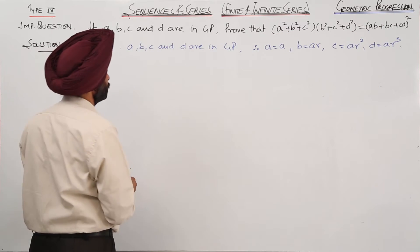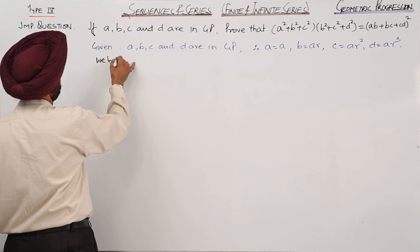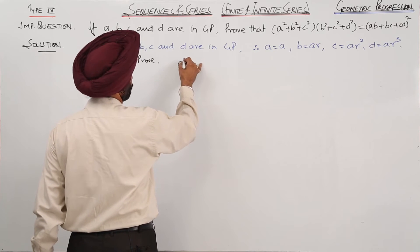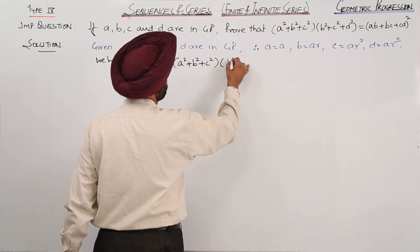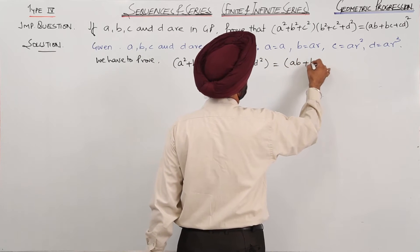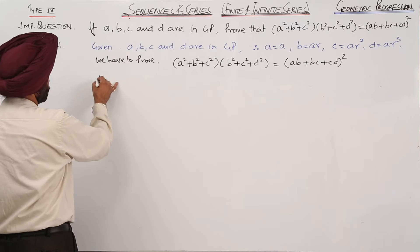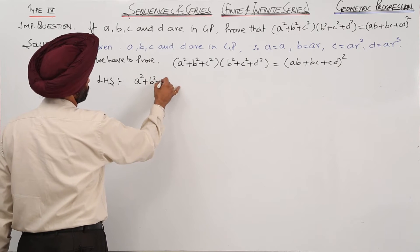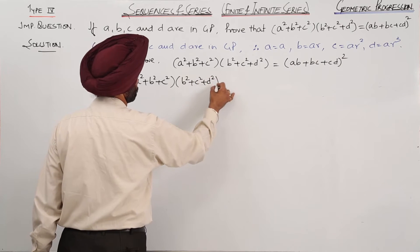Now what we have to prove? We have to prove A square plus B square plus C square, multiplied by B square plus C square plus D square, is equal to AB plus BC plus CD whole square. This we have to prove. Left hand side: A square plus B square plus C square multiplied by B square plus C square plus D square.